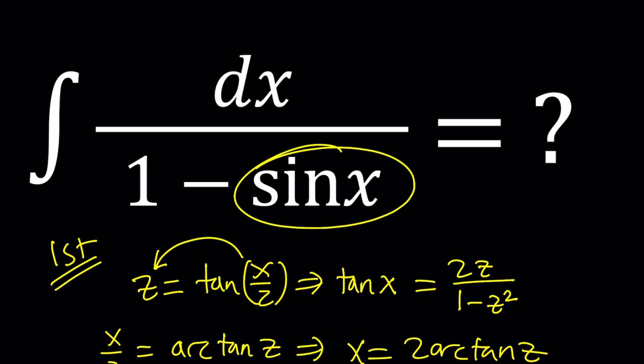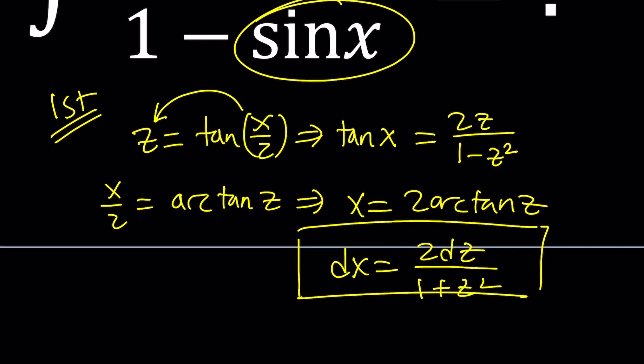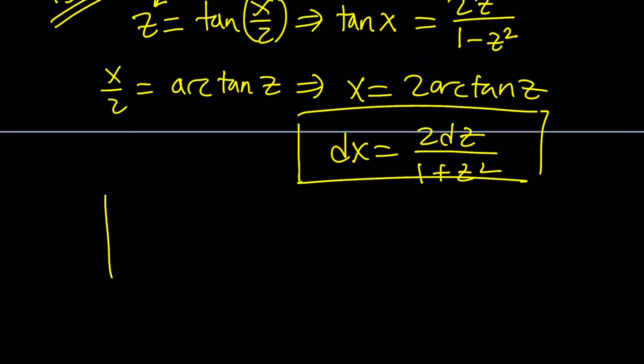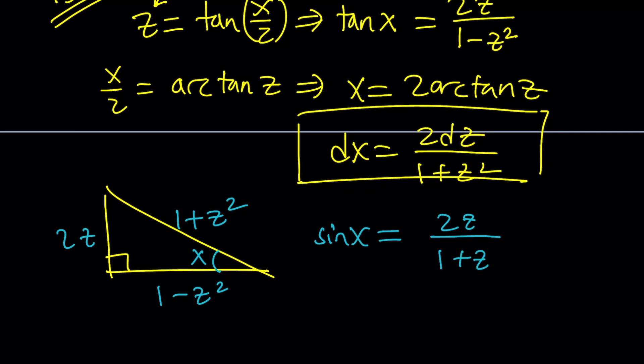How do you find sin x? Well, if you know tangent x, you can draw a right triangle. Let's go ahead and do that. So this is our right triangle, and this would be considered angle x. And we know that tangent x is 2z over 1 minus z squared. If you use the Pythagorean theorem, you're going to find 1 plus z squared for the hypotenuse. And the sin x from here is just going to be 2z over 1 plus z squared. Nice. We got sin x.